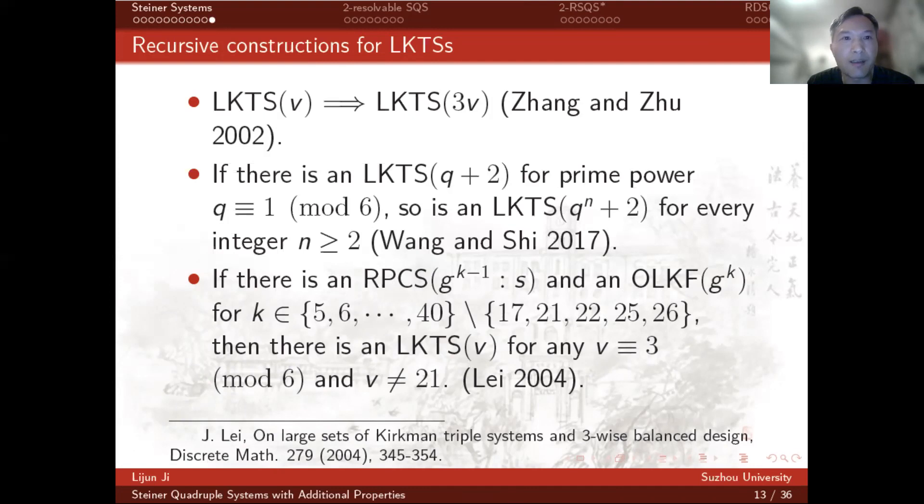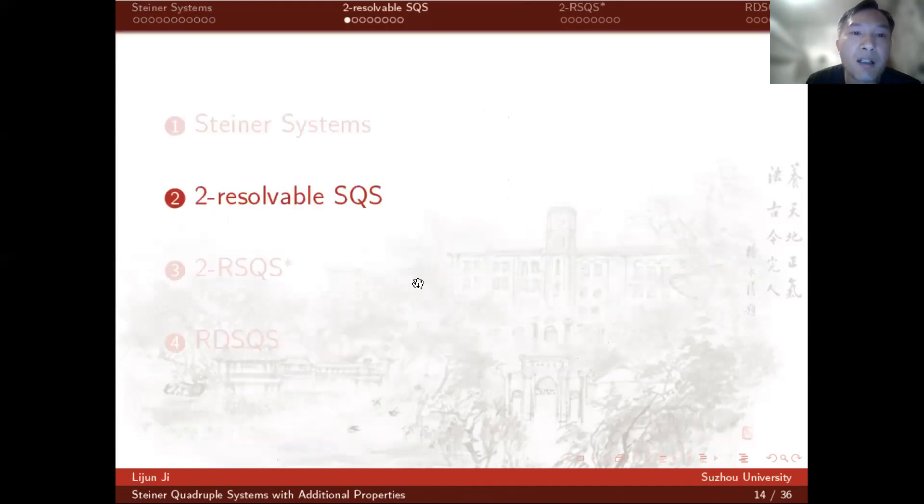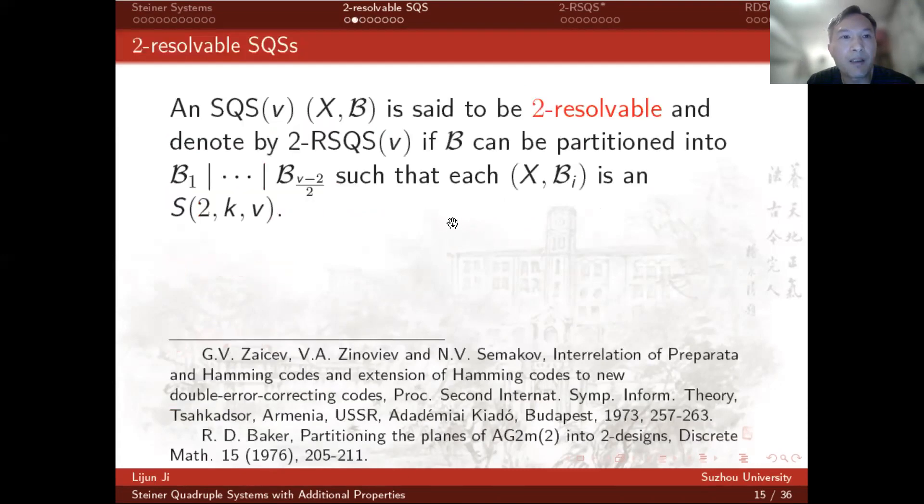Recently, special Steiner quadruple systems were introduced to study large sets of Kirkman triple systems. Recall that a Steiner quadruple system is said to be two-resolvable and denoted by 2-RSQS(v) if the block set can be partitioned into (v minus 1) over 2 parts such that each (X, B_i) is a BIBD.